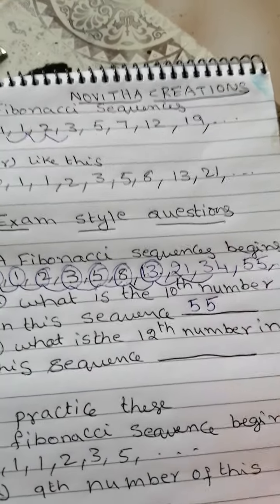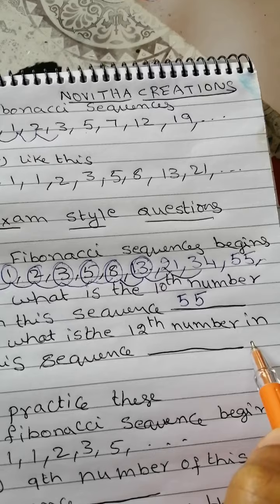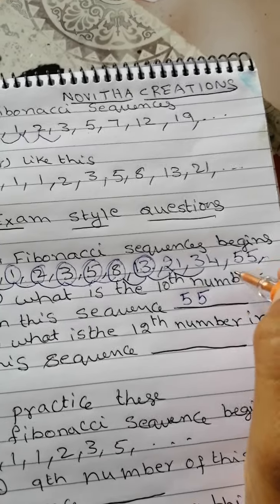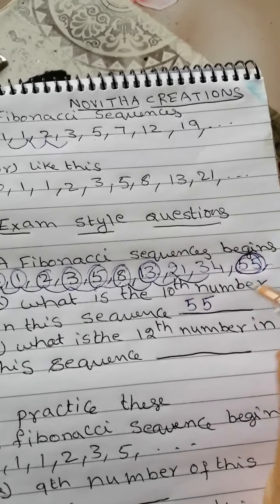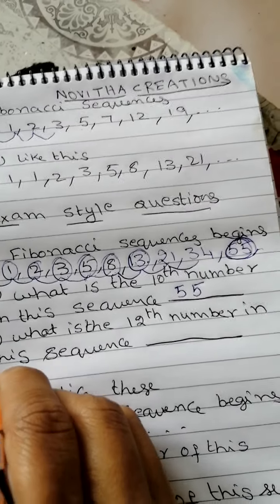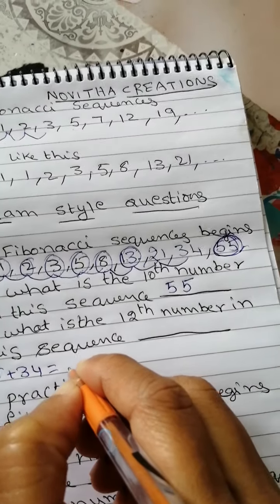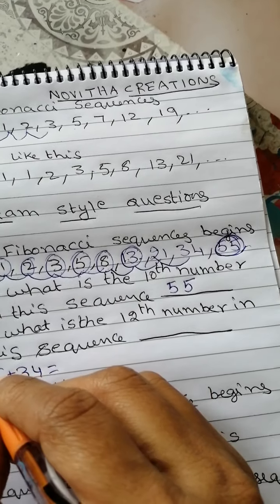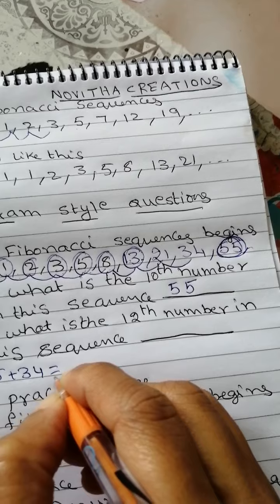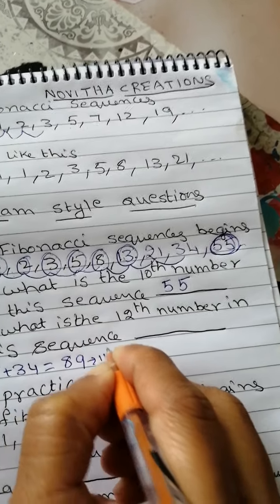And we need to find question B, the 12th number of this sequence. We know 10th number of the sequence is 55. So 55 add 34 will give you 11th number of the sequence. So 11th number of the sequence is 89.